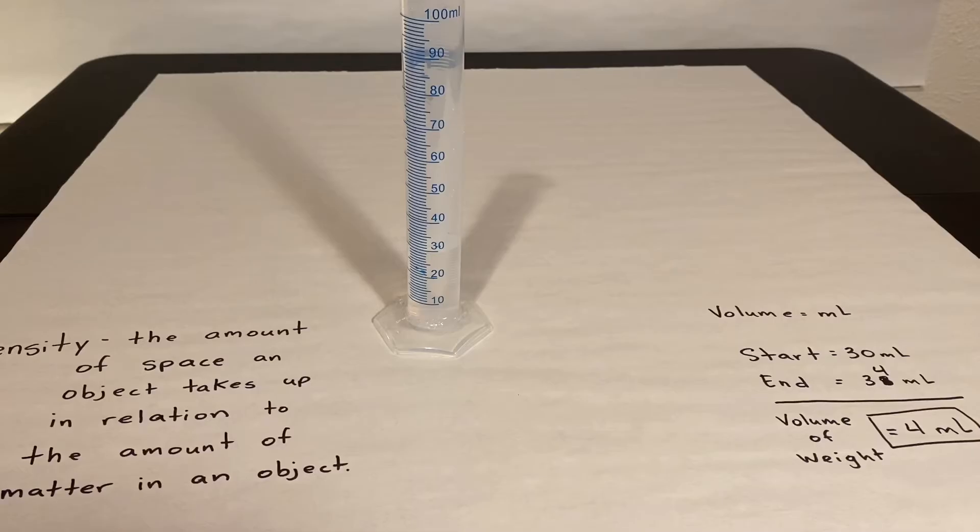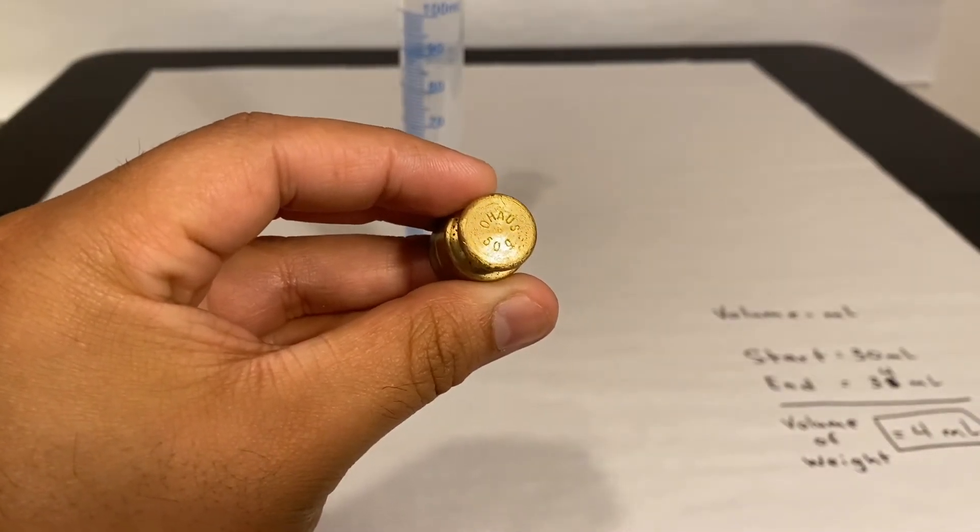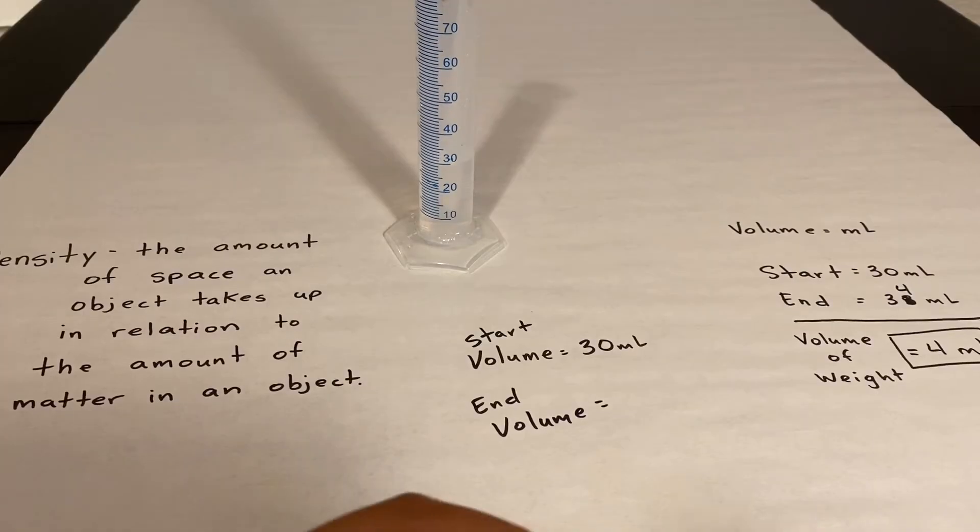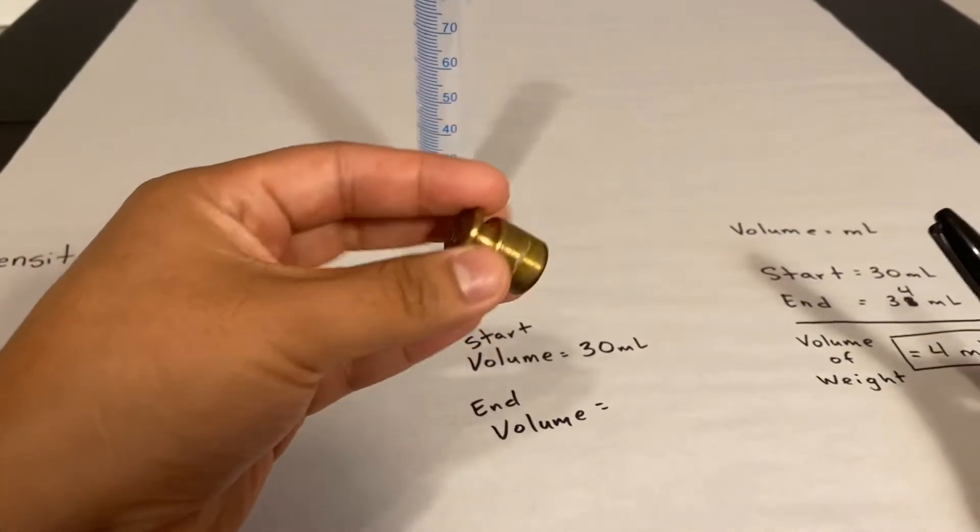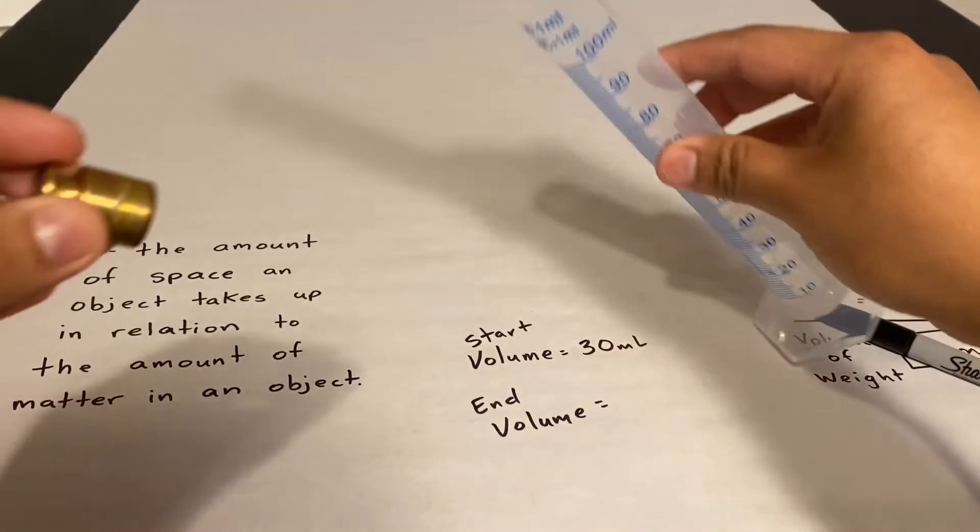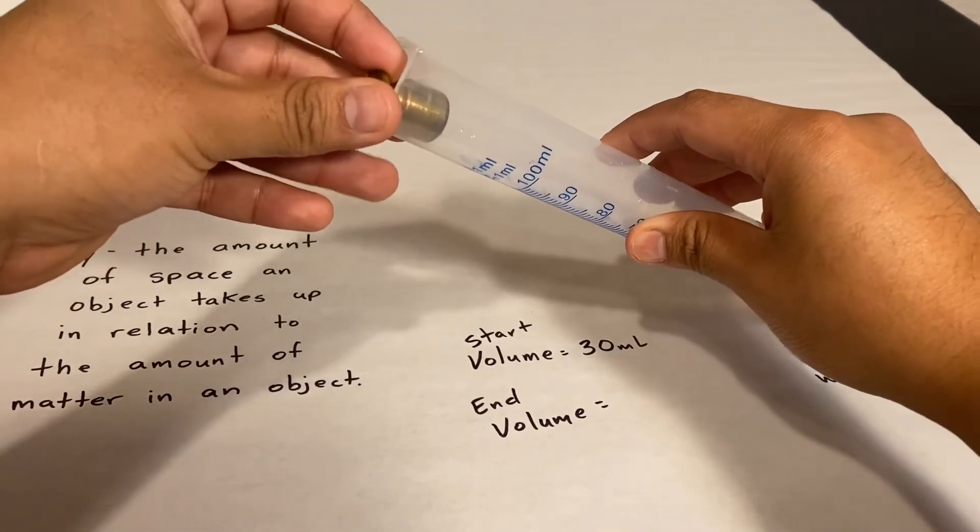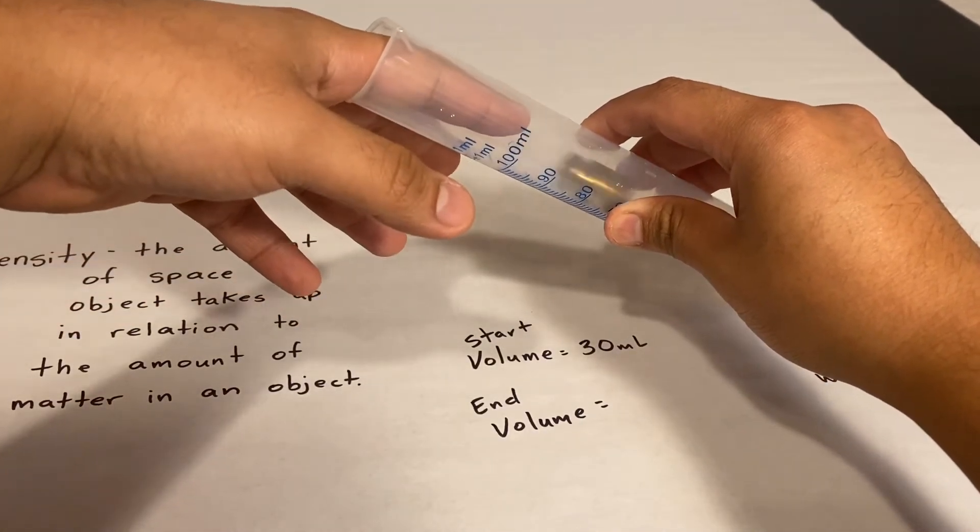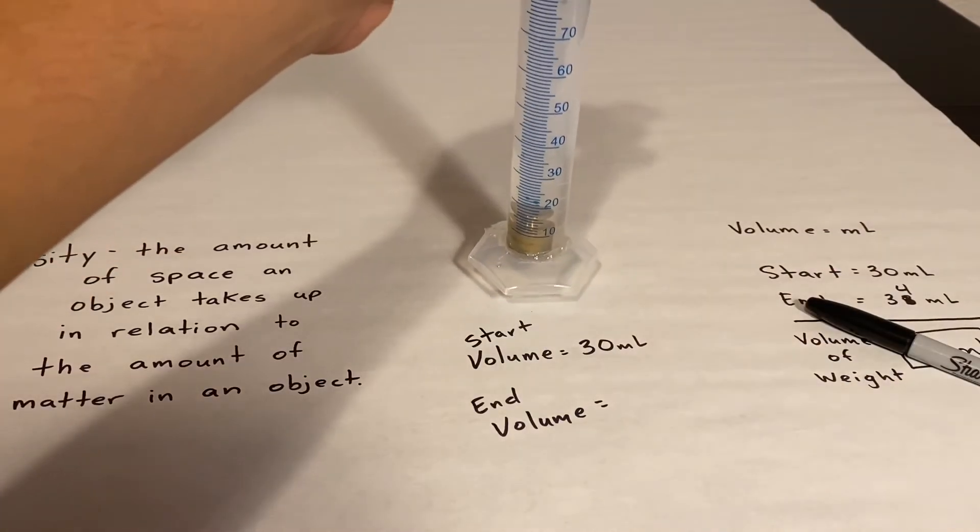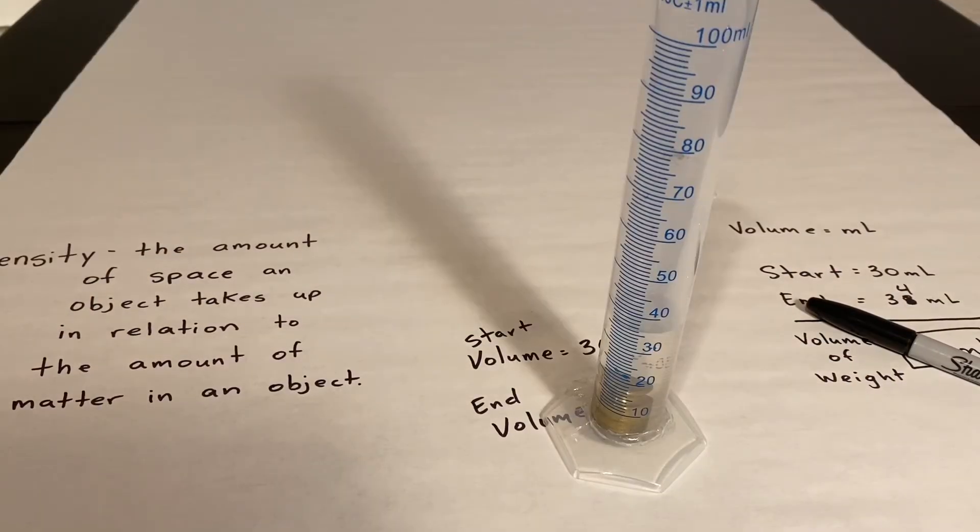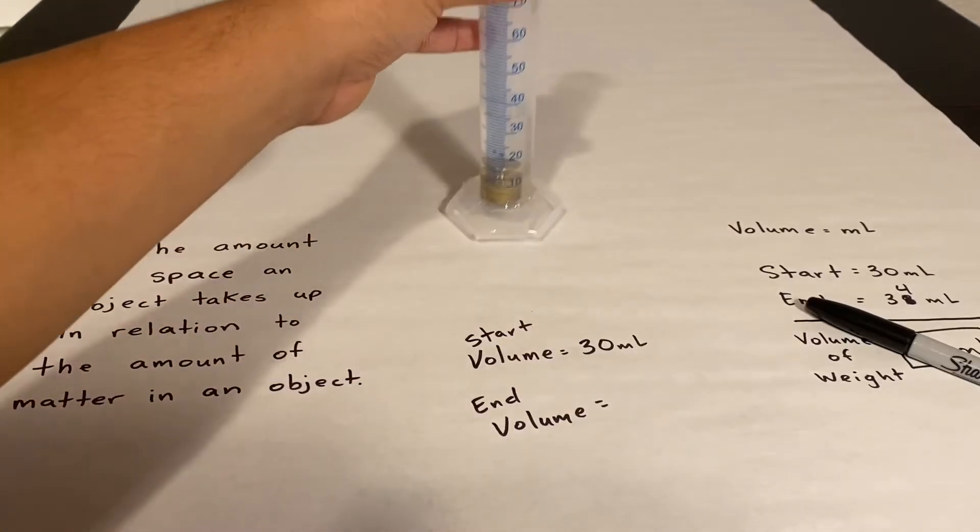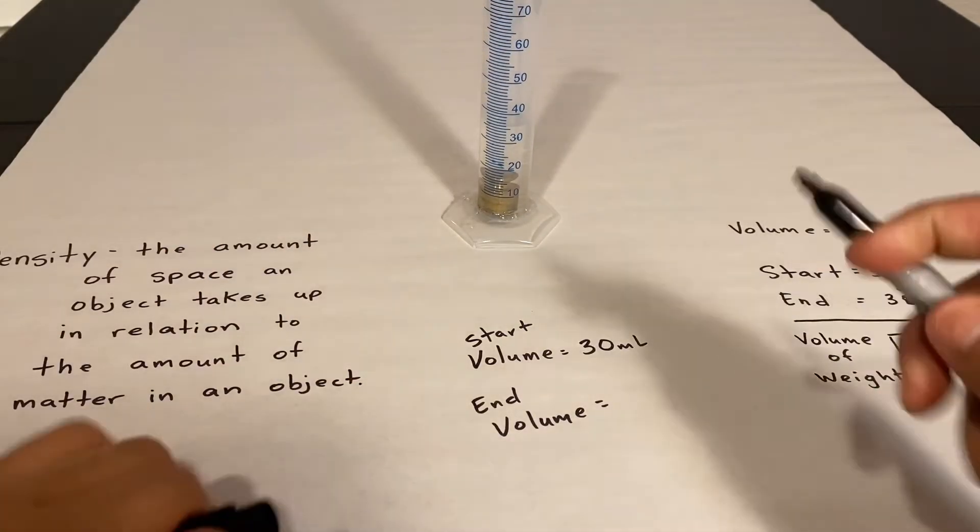Now this time I'm going to use a 50 gram weight, 50 grams. I'm going to drop it in there, go ahead and drop it. Again, I'm going to tilt this so it won't splash too much water, I'm going to try my best.